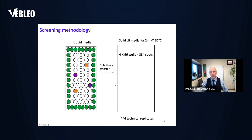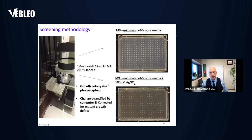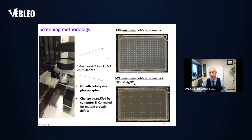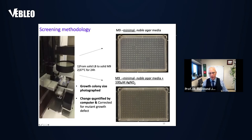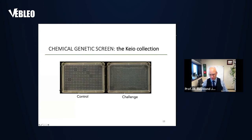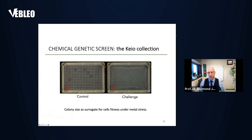We transferred from liquid media to solid media and set up a robot system with a little video of the robot planting. We chose a minimal media so we could control the physiology with silver. Our robot would do the inoculations and take photographs of the plates so we could look at colony size. Each spot is a bacterial colony of each mutant. Colony size is a surrogate for cell fitness under stress — how well the reproductive rate generates the size of the colony tells us how fit each particular mutant is under that challenge.